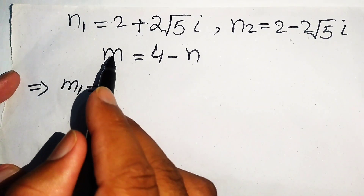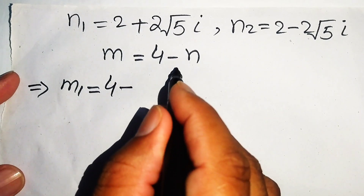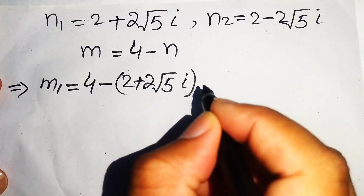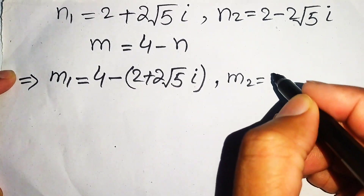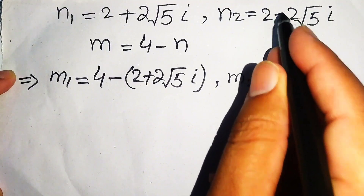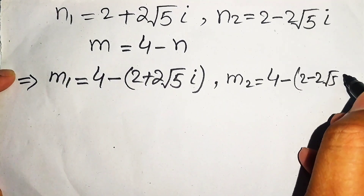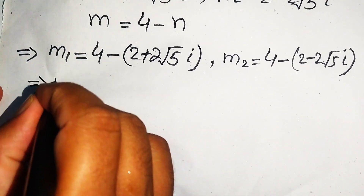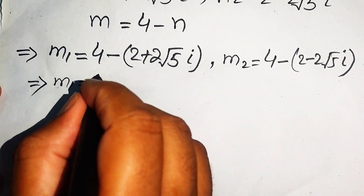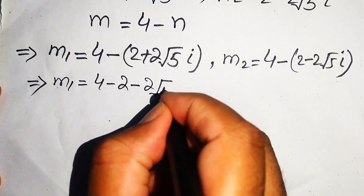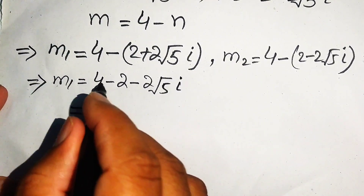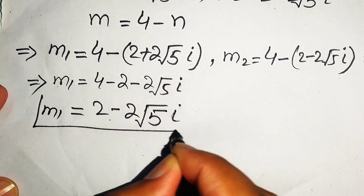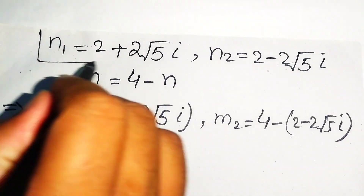For n1: m1 equals 4 minus (2 plus 2 root 5 i). Distributing the negative sign gives 4 minus 2 minus 2 root 5 i, so m1 equals 2 minus 2 root 5 i.